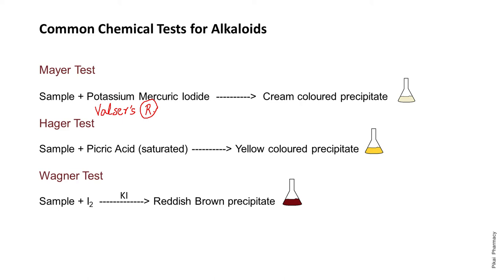The second test is Hager's test. Hager's reagent is saturated picric acid. When a sample reacts with saturated picric acid, it gives a yellow-colored precipitate. The presence of the yellow-colored precipitate indicates a positive Hager's test, meaning the sample contains alkaloid.